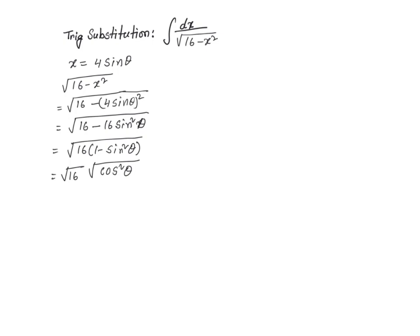So, if you solve for cosine squared of theta, you get 1 minus sine squared of theta. Square root of 16 is 4, and square root of cosine squared of theta is cosine of theta. So, square root of 16 minus x squared becomes 4 cosine of theta.